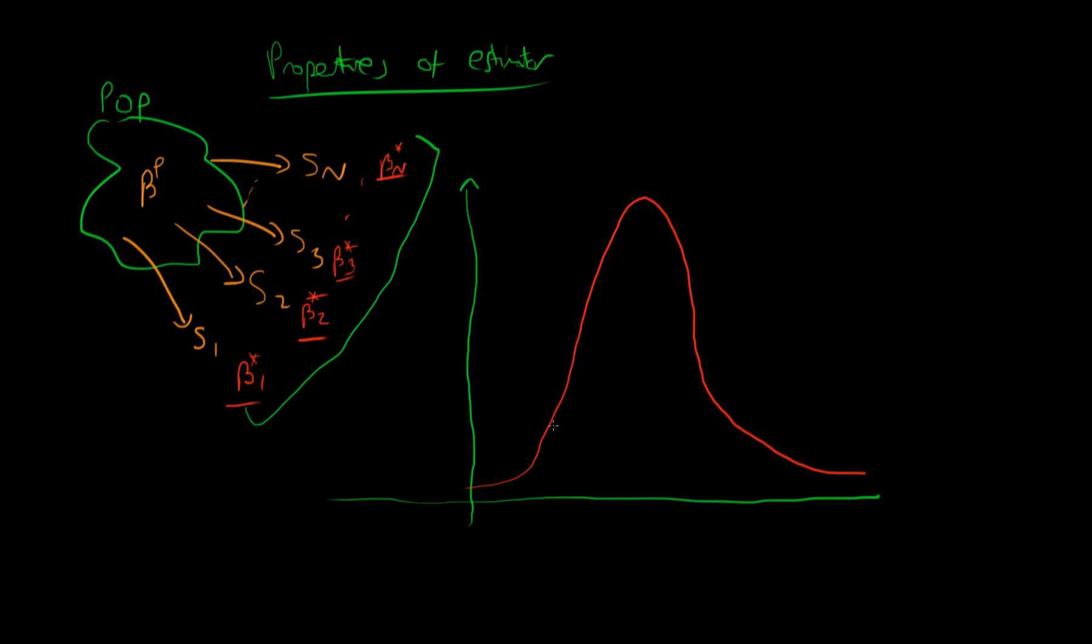So perhaps we get maybe 10 instances of beta 1 star, we get maybe only three instances of beta 2 star, for example. So this is a frequency plot of all the different values of beta star which we have got from applying our estimator to repeated samples.